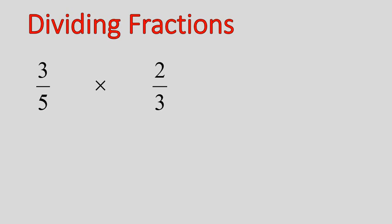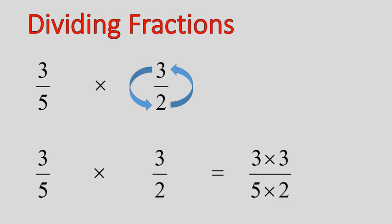All right, so there I switched the division symbol to multiplication. I'm going to flip this fraction upside down and rewrite the question. It becomes three over five times three over two. I multiply the top times the top, bottom times the bottom, and I get nine over ten, or nine tenths as my answer for this question.